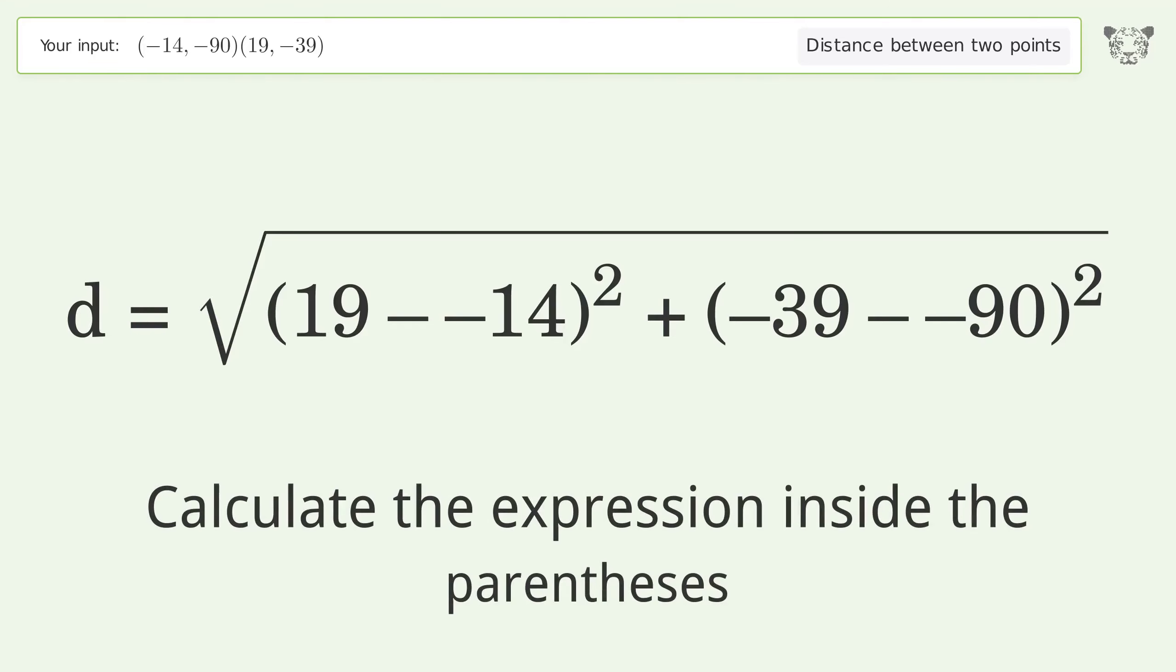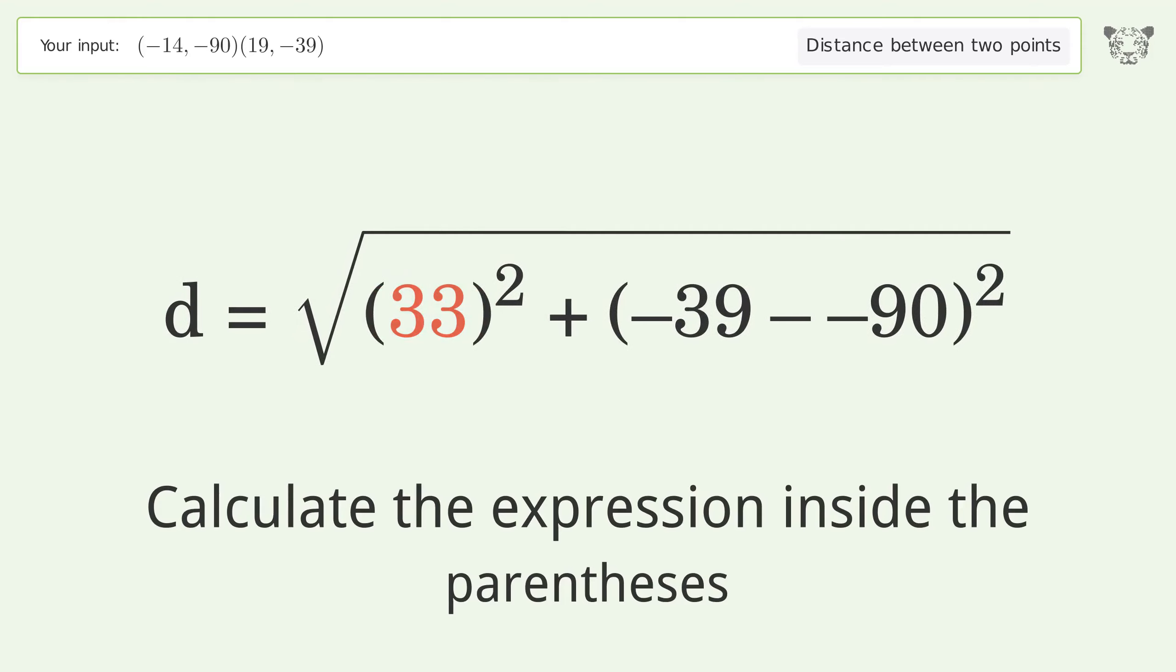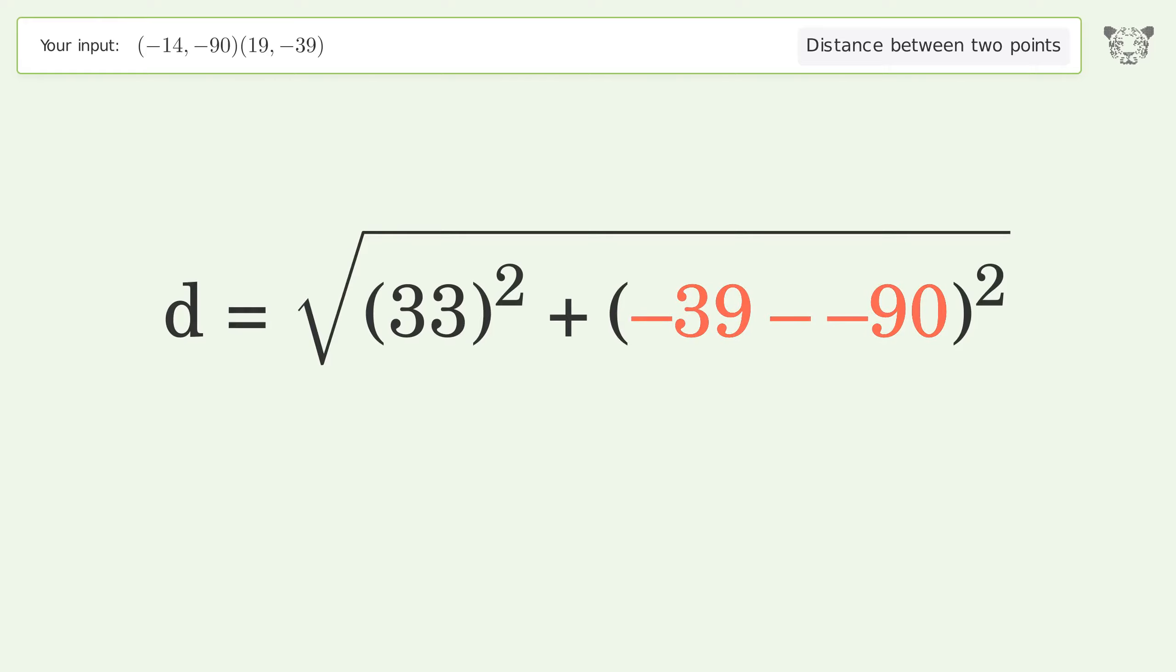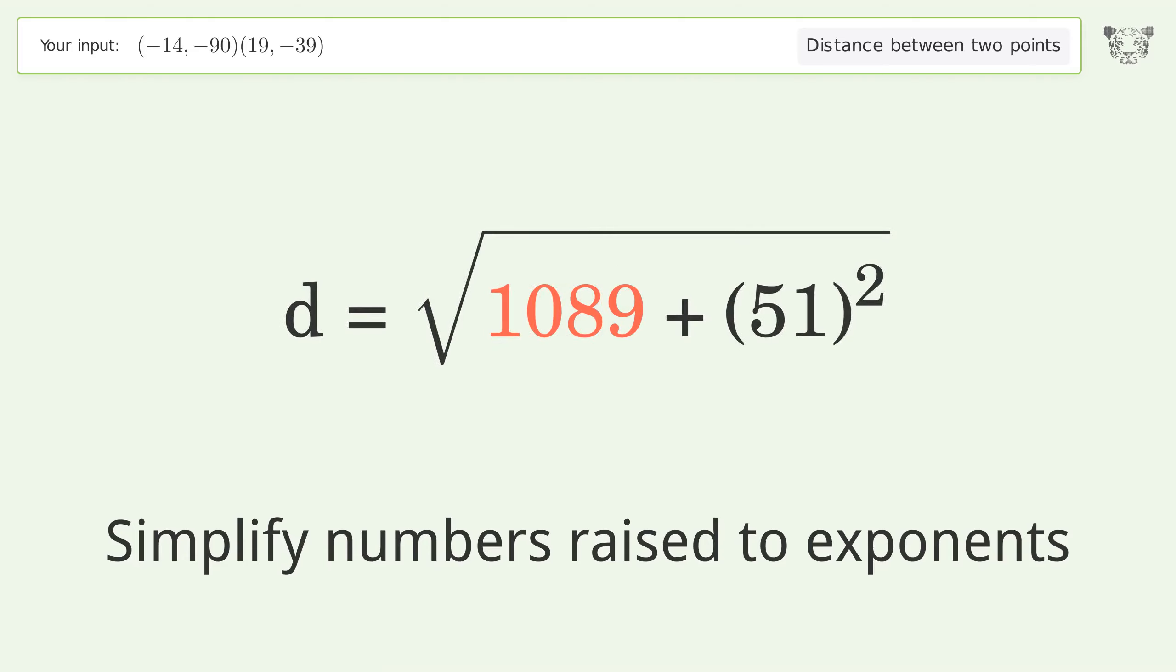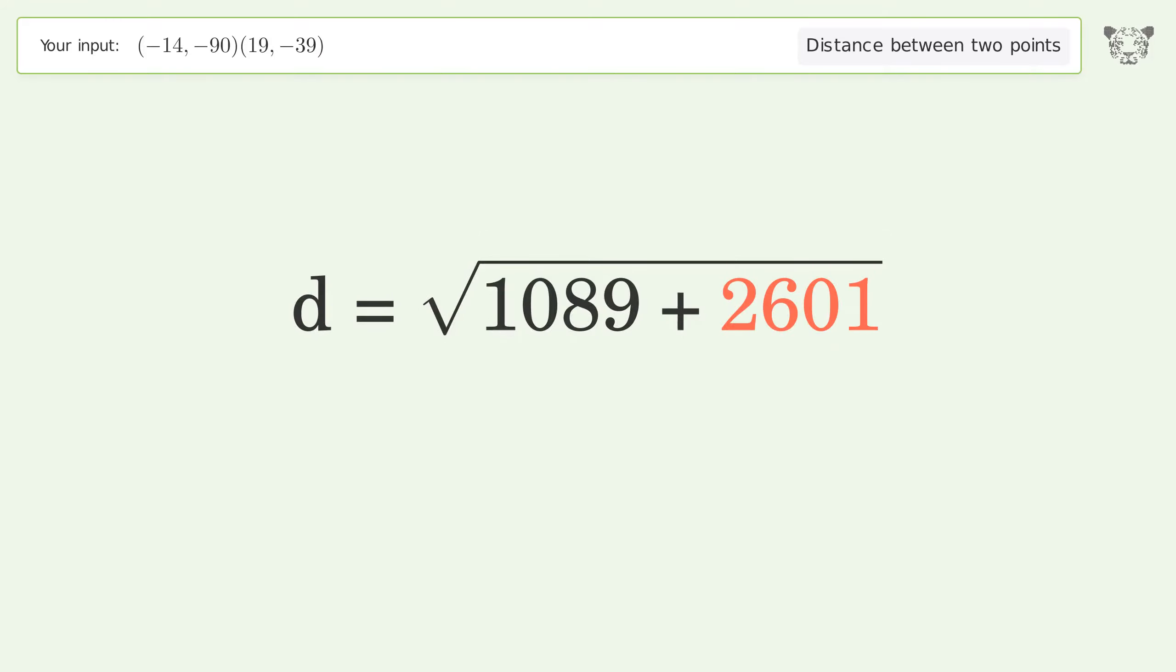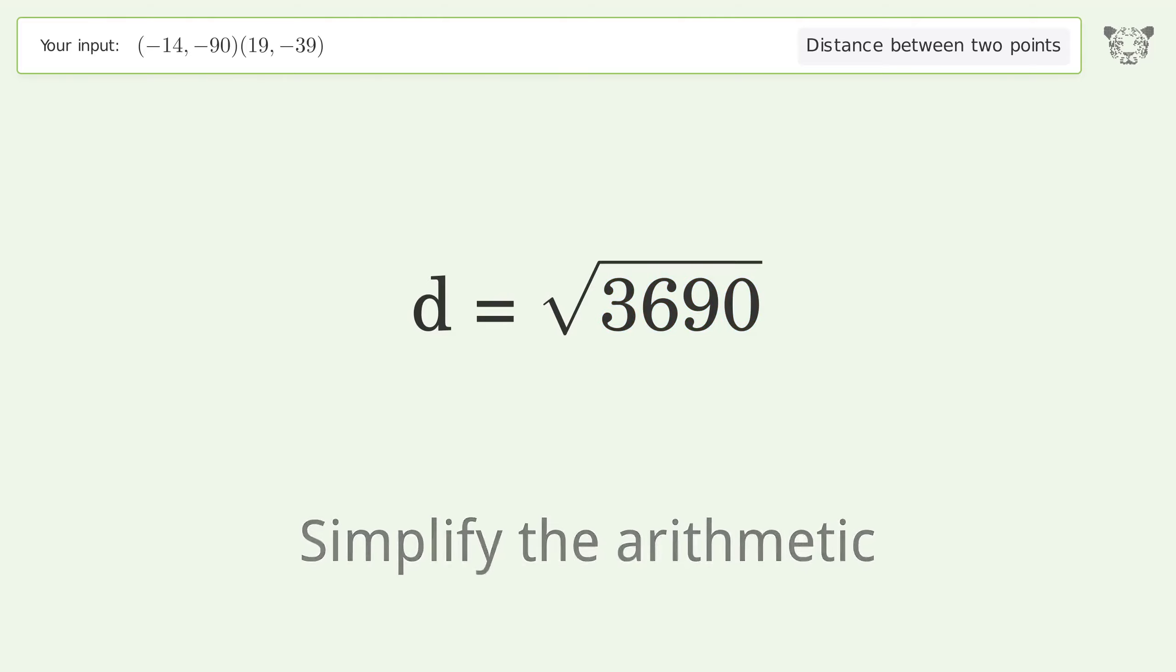Calculate the expression inside the parentheses. Simplify numbers raised to exponents. Simplify the arithmetic. And so the distance between the two points is the square root of 3690 or 60.745.